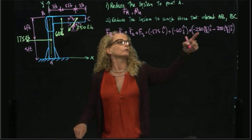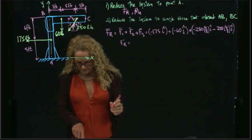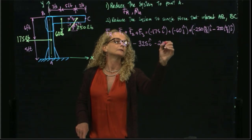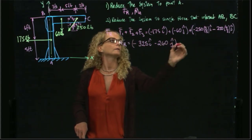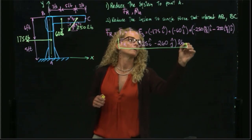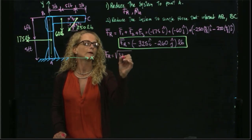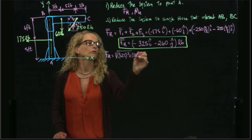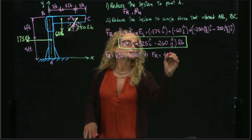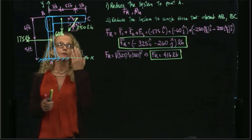Therefore, if I add these two values of I and these two values of J, I get the resultant force. The resultant force gives me negative 325 in I, negative 260 in J. This is all in pounds, as a vector. So if we want to find the magnitude, it will be the square root of 325 squared plus 260 squared.